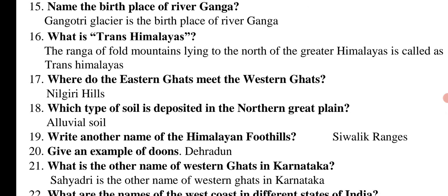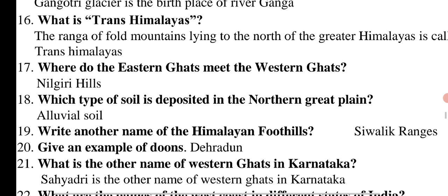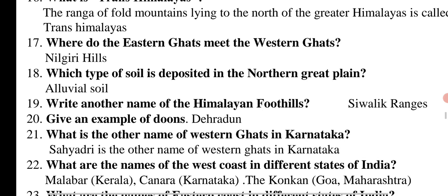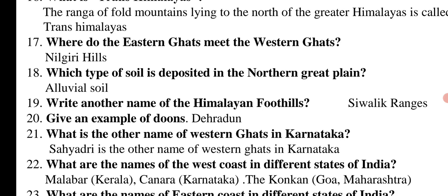Where do the Eastern Ghats meet the Western Ghats? Right answer: Nilgiri Hills. Which type of soil is deposited in the Northern Great Plains? Right answer: Alluvial soil. Write another name of the Himalayan foothills. Right answer: Shivalik Ranges.